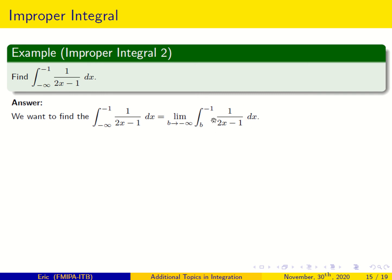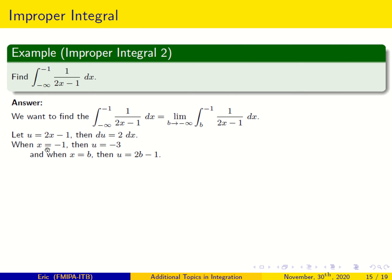We cannot solve this directly because this is 1 over something but not d(something). We use substitution: let u equal 2x minus 1, then du equals 2 dx, so dx equals one-half du. When x equals minus 1, u equals minus 3. When x equals b, u equals 2b minus 1.